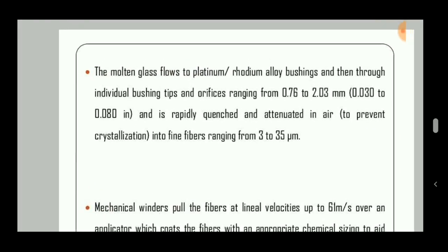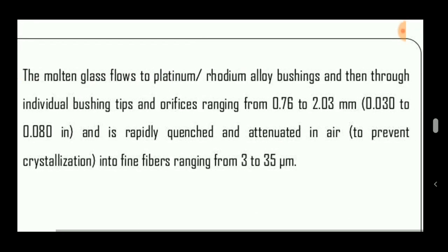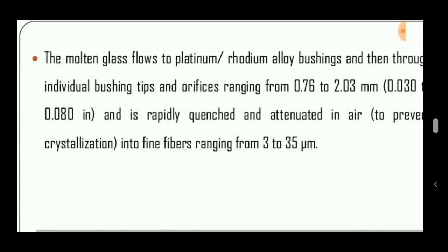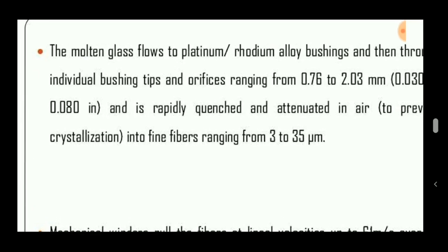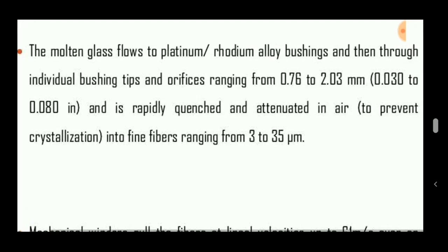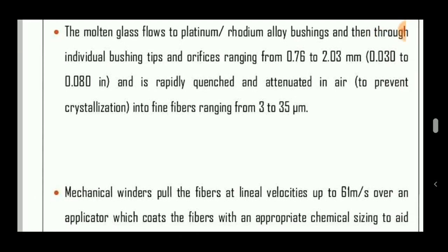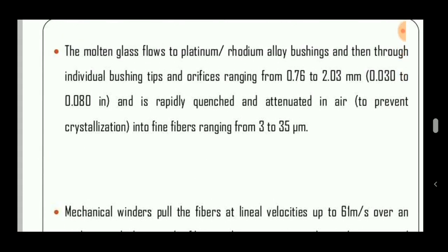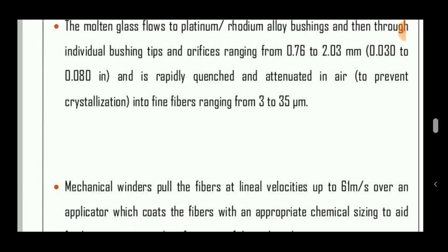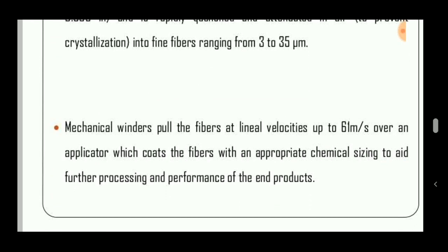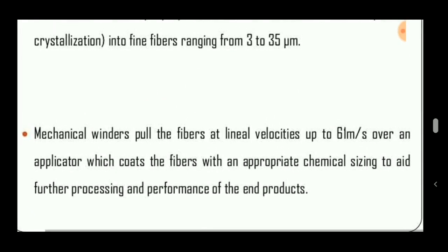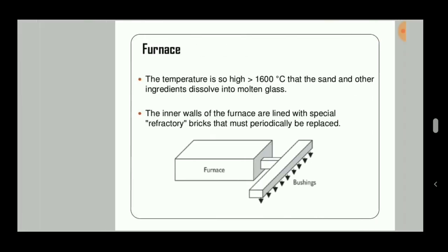The molten glass flows through platinum-rhodium alloy bushings and through individual bushing tips and orifices ranging from 0.762 to 0.03 mm. It is rapidly quenched — meaning suddenly heated then suddenly cooled — and attenuated in air, converting it into fine fibers of 3 to 35 micrometers. Mechanical winders pull the fibers at a velocity of 61 meters per second.